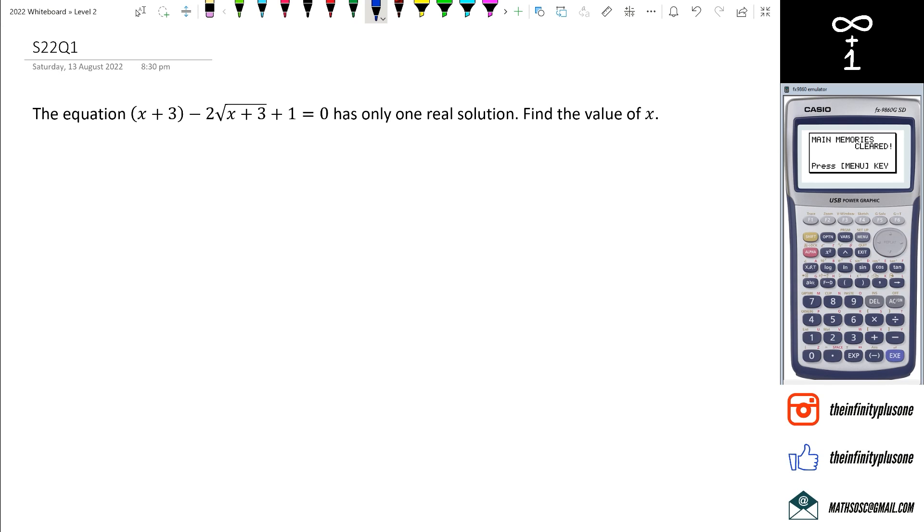So what do I mean by that? The first thing is that we're going to write down p is equal to square root of x plus 3, which means p squared is equal to square root of x plus 3 squared, which is going to equal x plus 3.